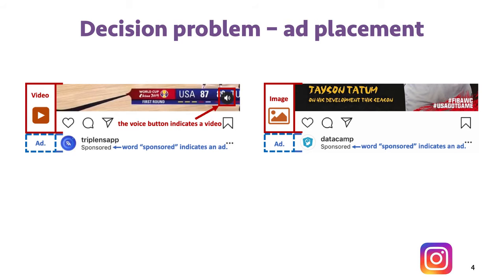We want to introduce one more decision problem: how to place an advertisement in the feeds. Advertisements produce a major income for internet companies like Google or Facebook. In a feed system like Instagram, there are two categories of contents: videos and images. In the feeds, a user will first see the content above the ad and then see the ad.